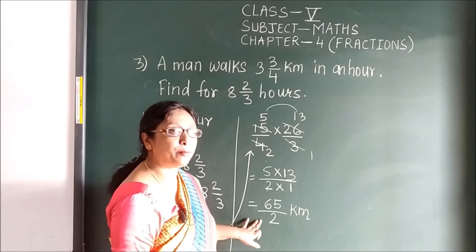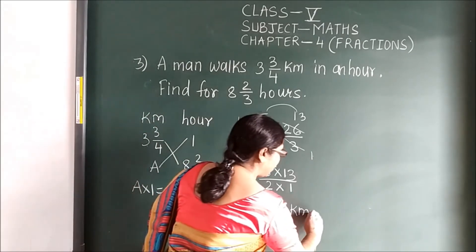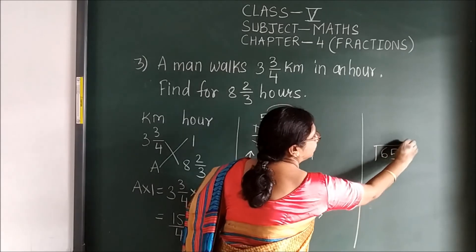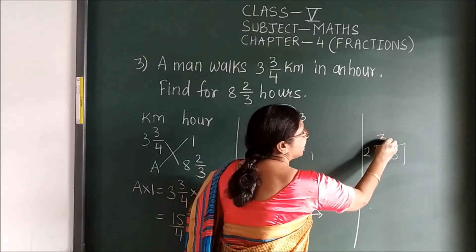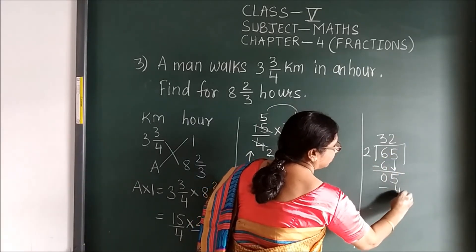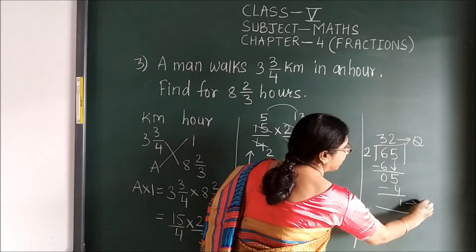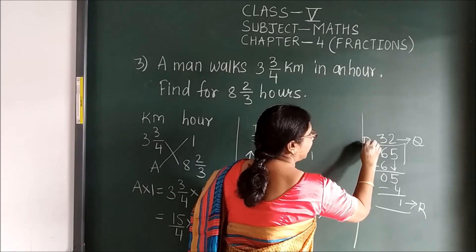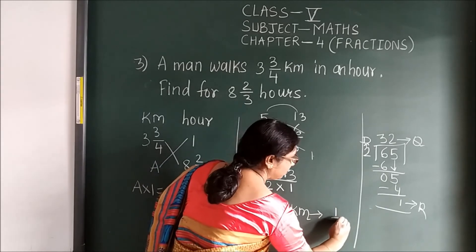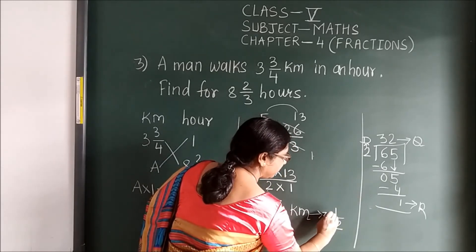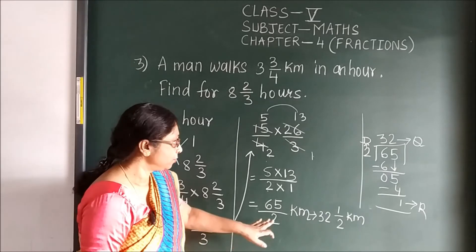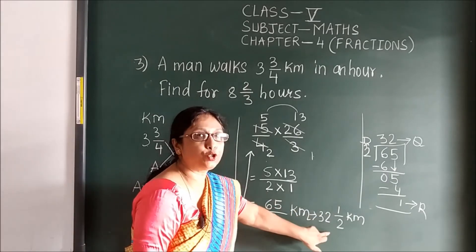Now convert 65/2 to mixed form. Divide 65 by 2: 2 × 32 = 64, remainder is 1. Quotient is 32, remainder is 1, divisor is 2. Writing in mixed form — remainder up, divisor down, quotient to the side — gives 32 and 1/2 kilometers.